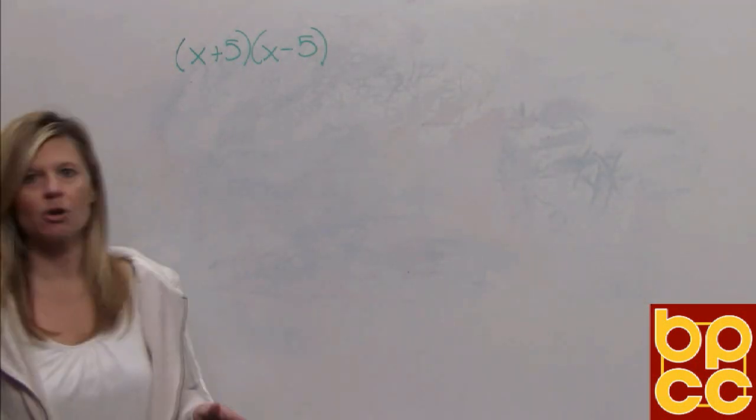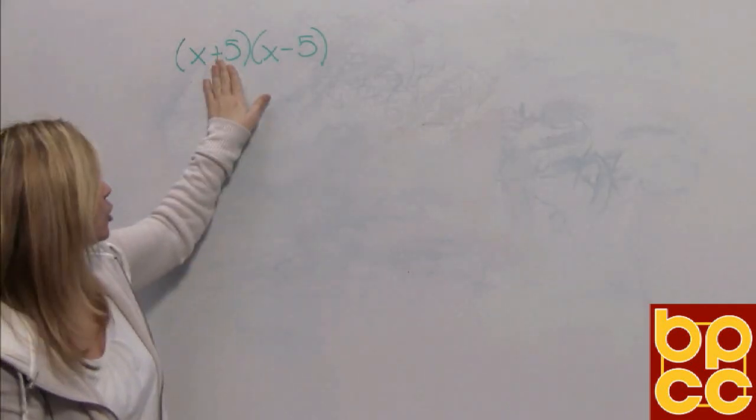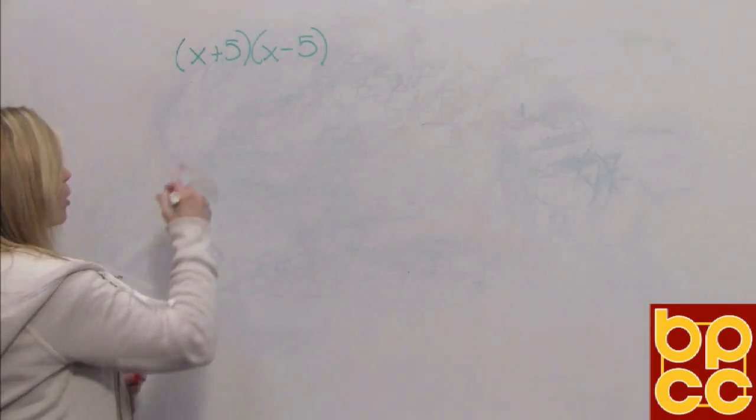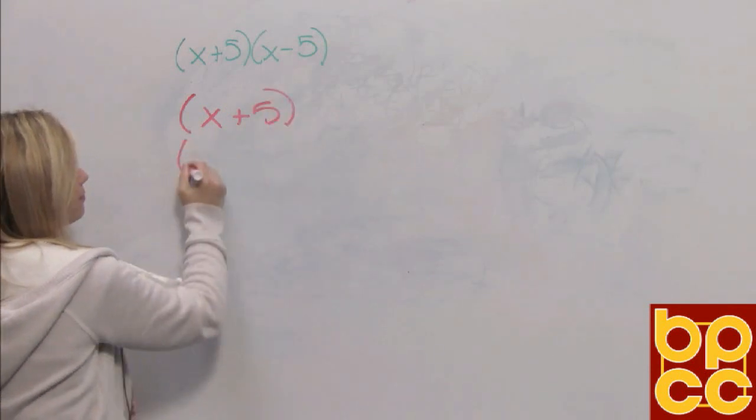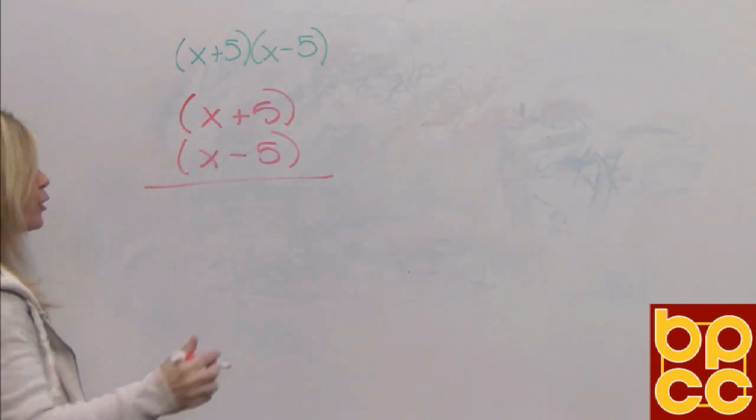When I last saw y'all, we were multiplying binomials. And I said to think of this like a two-digit number times a two-digit number. So one foolproof way that always works is lining it up like a third grader. And then you would do your third grade process.